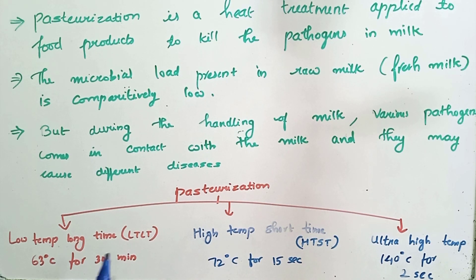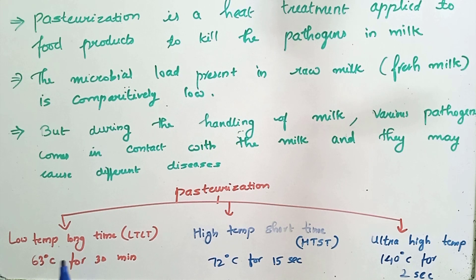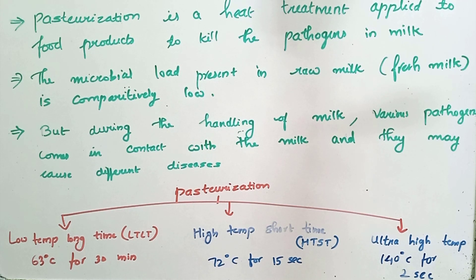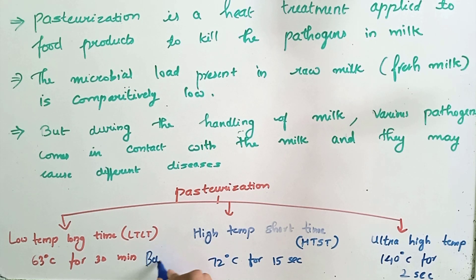In LTLT pasteurization, as the name indicates, a low temperature is applied for a long period of time — that is 63 degrees Celsius for a time period of 30 minutes. This LTLT pasteurization is also known as batch pasteurization.